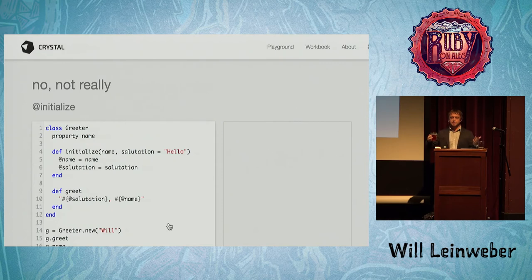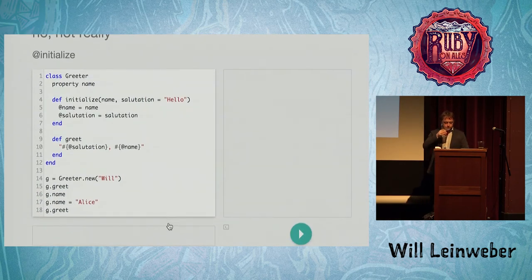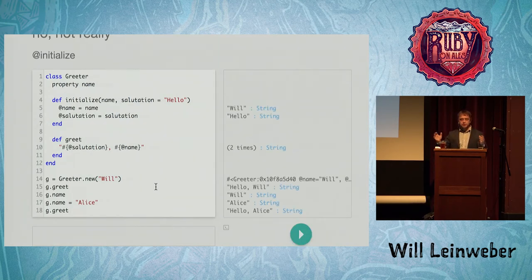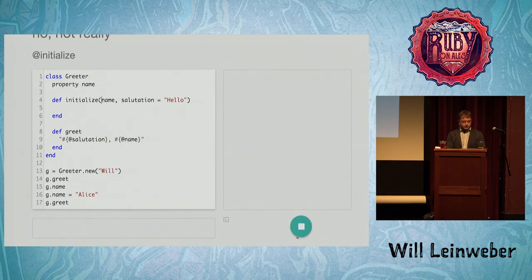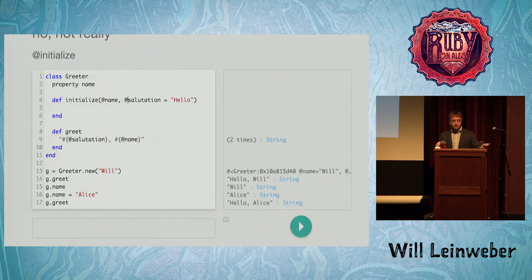So you might be thinking, is this just the same thing as Ruby? No, there are some cool differences. One small nicety: this pattern of always assigning arguments to an instance variable is a lot of boilerplate code. In Crystal, you can actually put the at signs up in the argument list, and that's just a shorthand for the same thing. Another difference is that instead of attr_accessor, it's 'property' — just a different term.